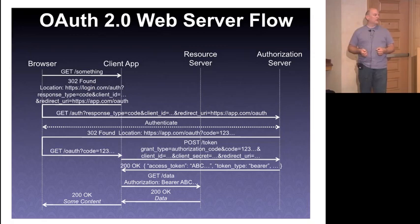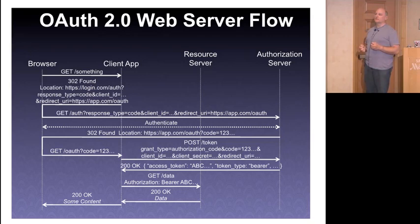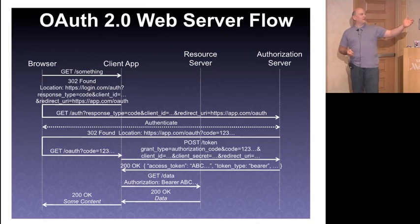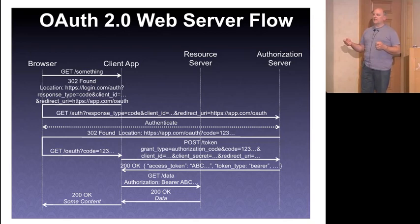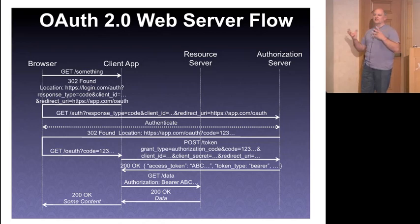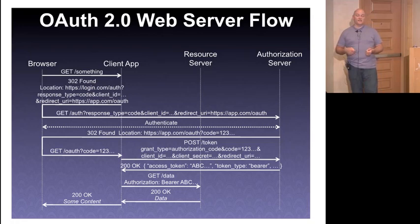Once authenticated, the authorization server redirects back with a short-lived code as a query parameter. Query parameters get logged everywhere and appear in the browser URL bar, so this code is very short-lived. It enables the client app to then POST over SSL to the authorization server with the authorization code, its client ID, its secret — a shared secret between the client app and the authorization server — and that redirect URI.